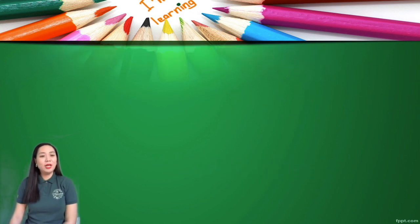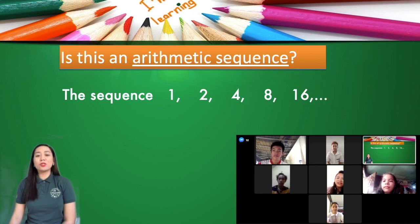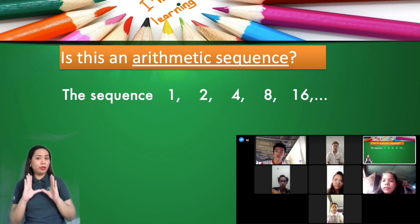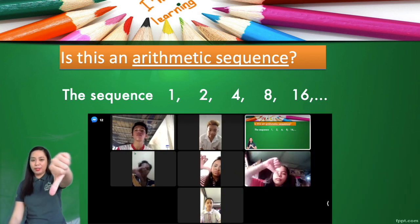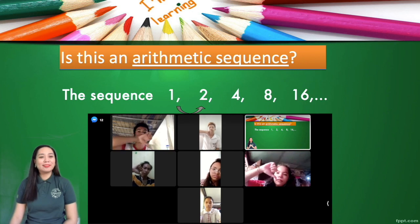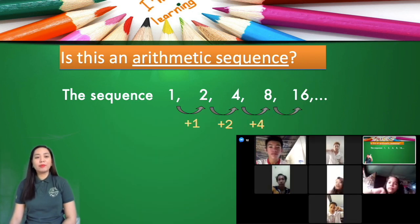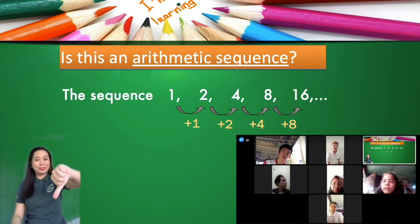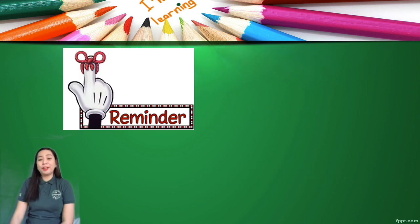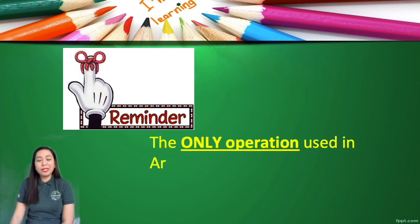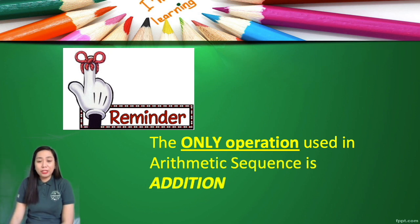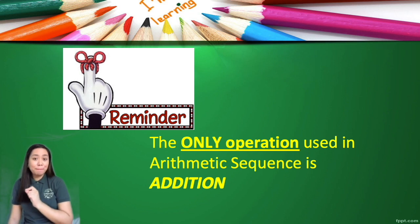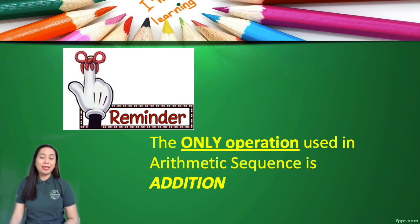Let's have more. What about 1, 2, 4, 8, 16? Are we adding a common number? We add 1, add 2, add 4, and add 8 — there's no common difference, therefore it's not an arithmetic sequence. Just a gentle reminder: in an arithmetic sequence, the only operation used is addition. If numbers are decreasing, we are adding a negative number; if increasing, we are adding a positive number.